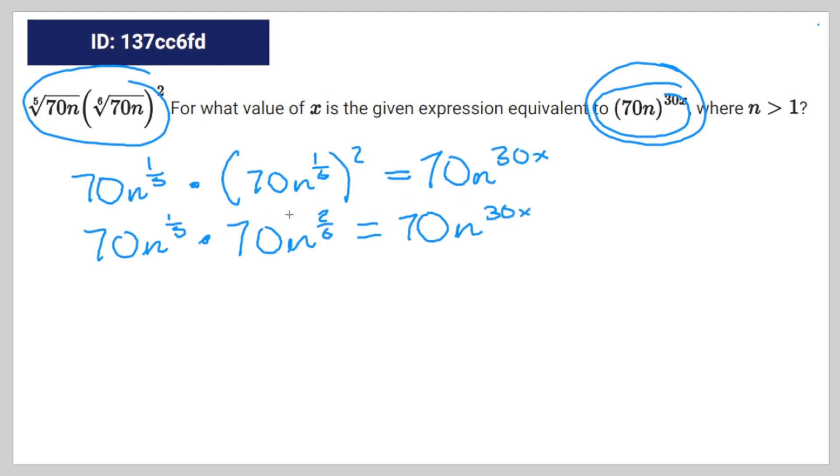Since these exponents have the same base, you can rewrite this question further as 1 fifths plus 2 sixths is equal to 30x.